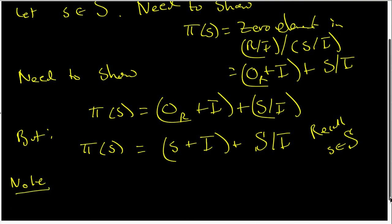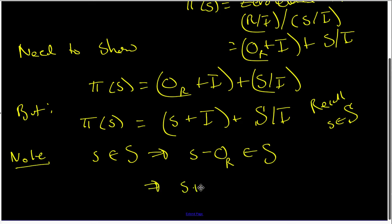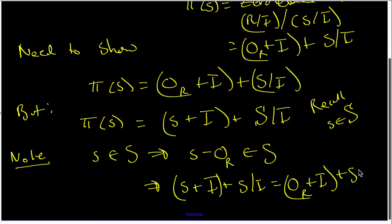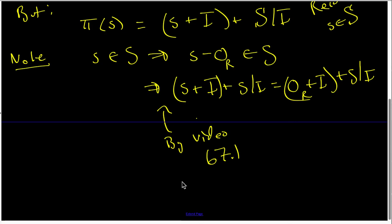Now look at this. We have the following basic idea: s is inside capital S, so that implies that s minus the zero inside ring R is part of capital S. And that implies that (s + I) + S mod I is equal to (0 + I) + S mod I. That last step is by the results from video 67, where we looked at the elements inside the ring R mod I modded out by S mod I.